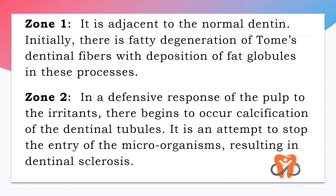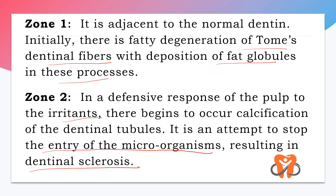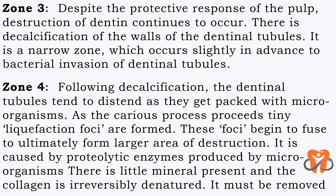In detail: Zone 1 lies adjacent to normal dentine. Initially there is fatty degeneration of the Tomes' dentine fibers with deposition of fat globules in these processes. Zone 2: in defense response of the pulp to irritants, calcification of the dentinal tubules begins to occur — an attempt to stop the entry of microorganisms, resulting in dentinal sclerosis. Zone 3: despite the protective pulp response, destruction continues — there is decalcification of the walls of the dentinal tubules. This is a very narrow zone occurring slightly in advance of the bacterial invasion.